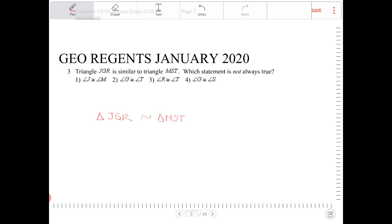The order of the letters matter because the two triangles here are similar. All the corresponding vertices must match.